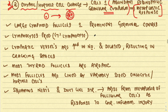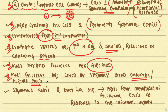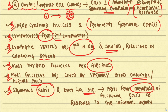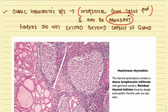Other microscopic features include large lymphoid follicles with prominent germinal centers, predominantly T-lymphocytes. Lymphatic vessels are increased and dilated, forming cracking spaces. Most thyroid follicles become small and atrophic, lined by oncocytic or Hurthle cells. Squamous metaplasia may be seen — squamous nests and duct-like structures arising from follicular cell metaplasia in response to chronic inflammatory injury. Classic Hashimoto's shows abundant interstitial connective tissue and fibrosis that does not extend beyond the capsule.